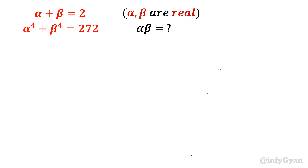Hello everyone, welcome to InfiJAN. In this video, we are going to solve a simultaneous set of equations: alpha plus beta equal to 2, and alpha power 4 plus beta power 4 equal to 222. We have to find the value of alpha and beta, and most importantly, alpha and beta are real numbers. So let's start.